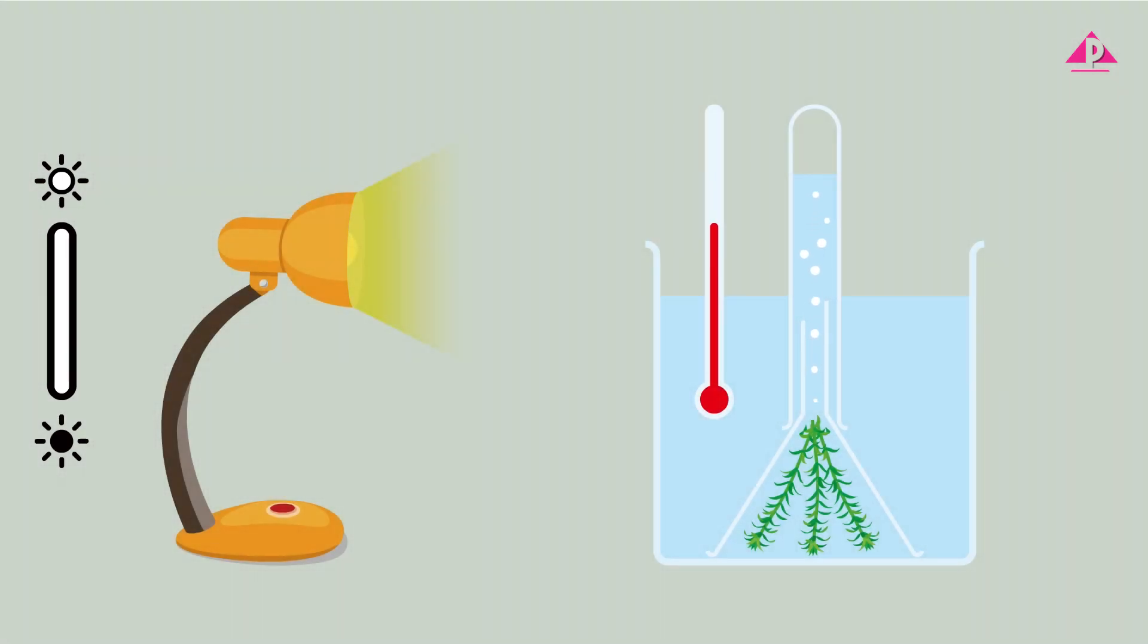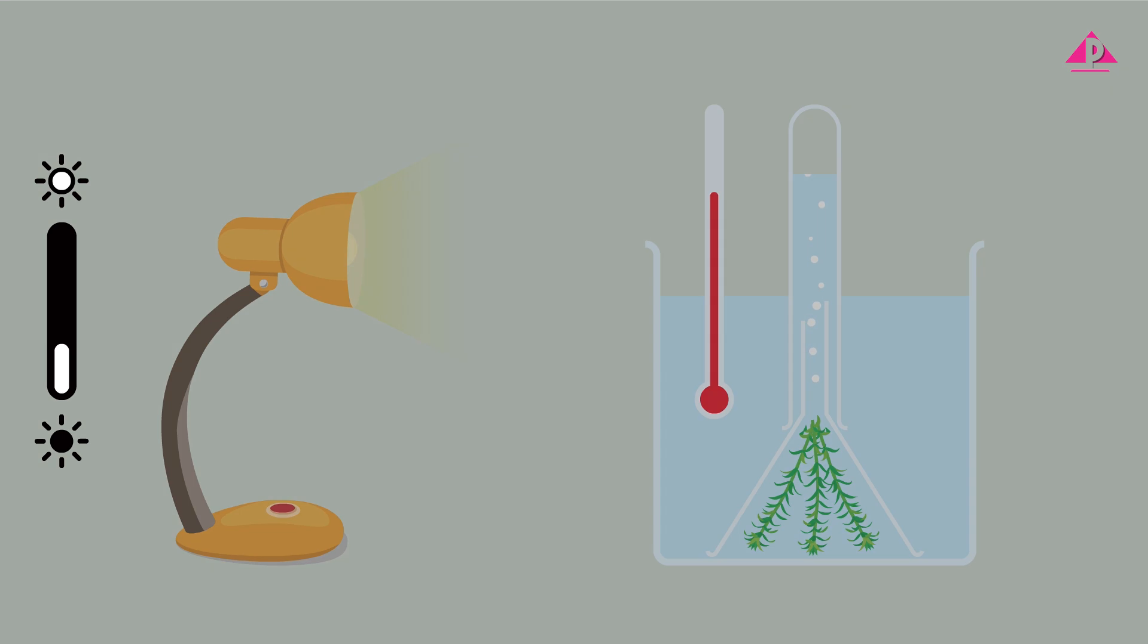To make the investigation valid, keep all control variables constant, like temperature and carbon dioxide concentration, so only the independent variable, light intensity, changes.